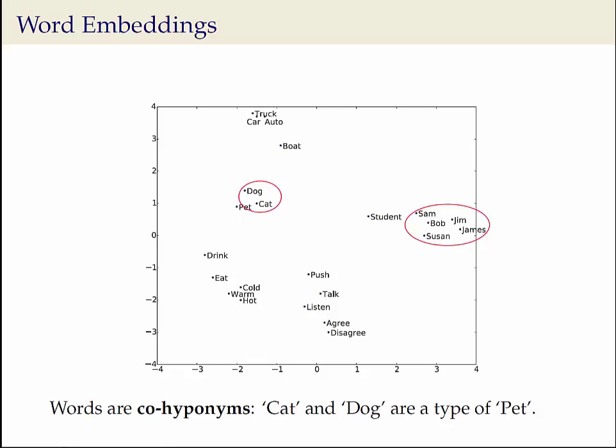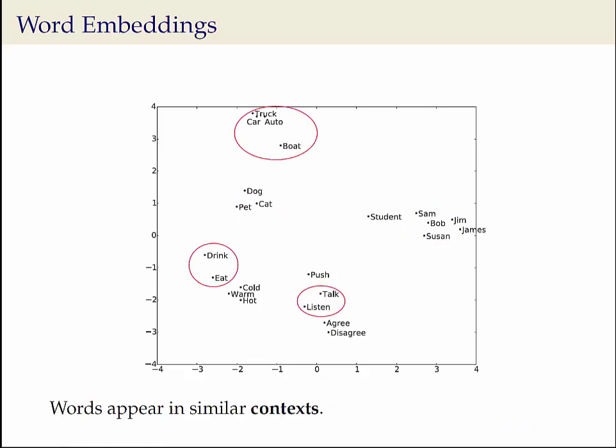Also, we notice a cluster of names which are all co-hyponyms. Finally, we notice groups of words which appear in similar contexts. For example, eat-drink and talk-listen are pairs of verbs that describe related actions.